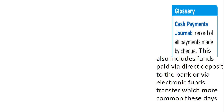The cash payments journal is a record of all payments made by check or any form of payment. This also includes funds paid via direct deposits to the bank, or via electronic funds transfers (EFTs), which is common these days, or by bank cards. Any form of payment — including cell phone banking — will be recorded in the cash payments journal.